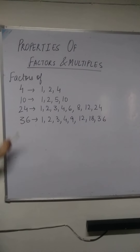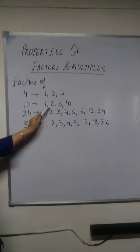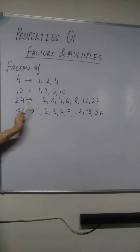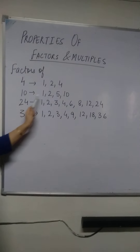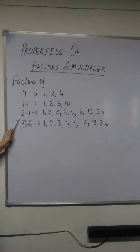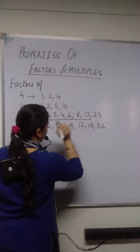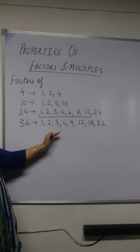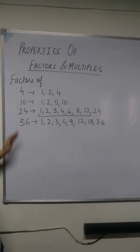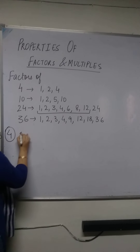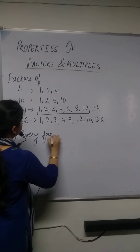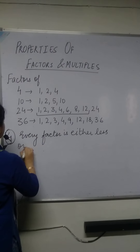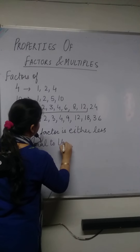Coming up to the next property, if we see the factors of 10: 1, 2, 5, 10 — 1 is obviously less than 10, 2 is less than 10, 5 is less than 10. But the last factor, that is 10, is equal to 10. In the case of 24 also, all these factors are less than 24, but 24 is equal to 24. In all these cases, we do not have any factor which is greater than the given number. So the fourth property says: every factor is either less than or equal to the given number.